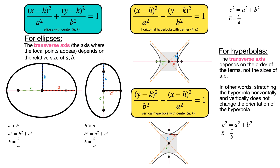Here's the master plan of how all these things relate to each other. The transverse axis is the axis where focal points appear, and by definition it is also the axis where vertices appear. In an ellipse the vertices are the endpoints of the transverse axis, and the transverse axis is determined by the relative size of a and b: if a is bigger than b it's horizontal, and if b is bigger than a it's vertical.